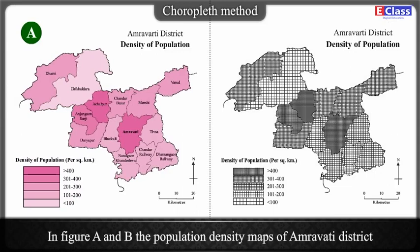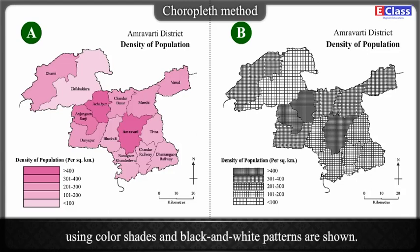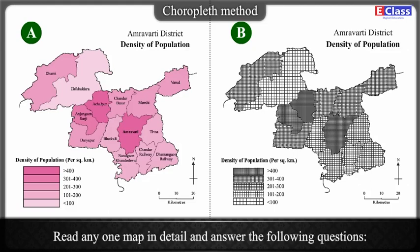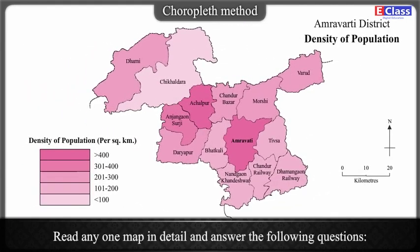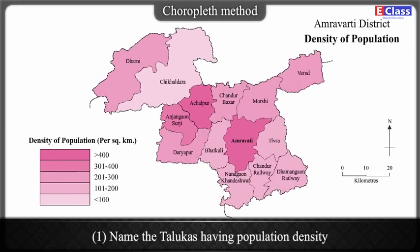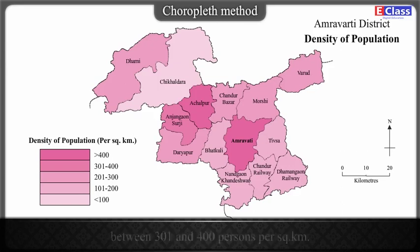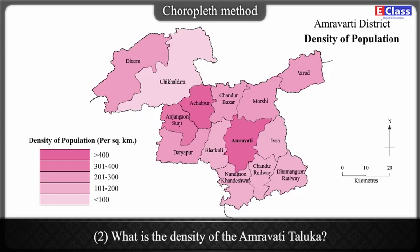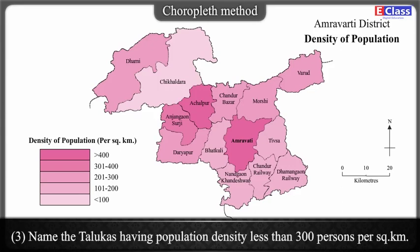In figures A and B, the population density maps of Amravati district using color shades and black and white patterns are shown. Read any one map in detail and answer the following questions: Name the talukas having population density between 301 and 400 persons per square kilometer. What is the density of the Amravati taluka? Name the talukas having population density less than 300 persons per square kilometer.